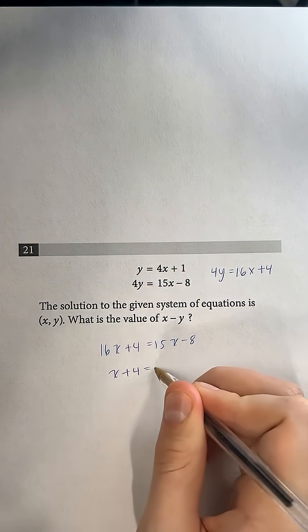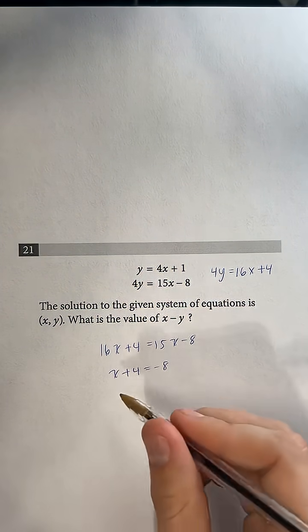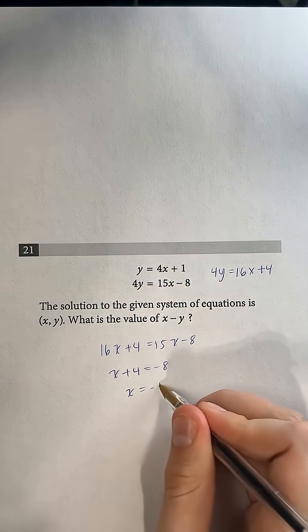So we'll have x plus 4 equals negative 8. Subtract 4 from both sides, x equals negative 12.